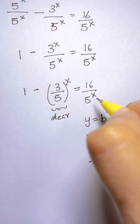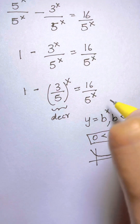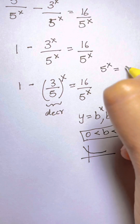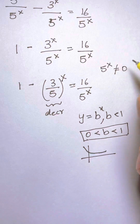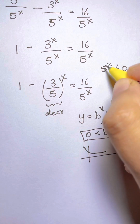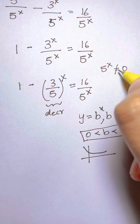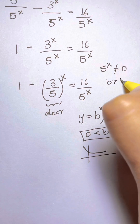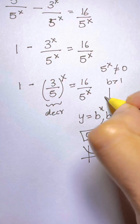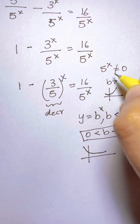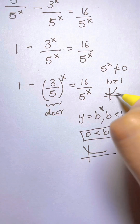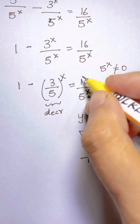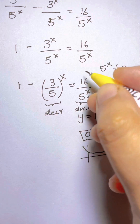Now what about 16 over 5^x? Note that 5^x is never equal to 0. The base here is 5, which is greater than 1, so 5^x is an increasing function. Since it's in the denominator and the whole expression is reciprocated, 16 over 5^x is a decreasing function.